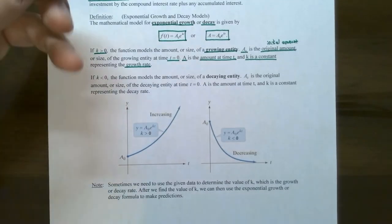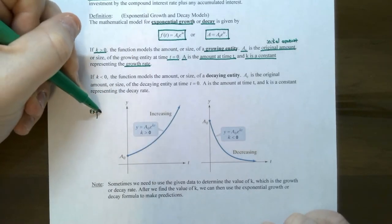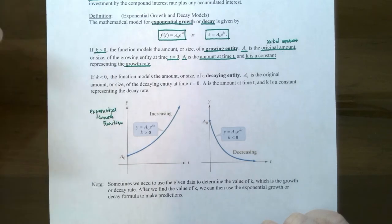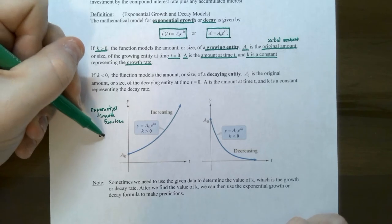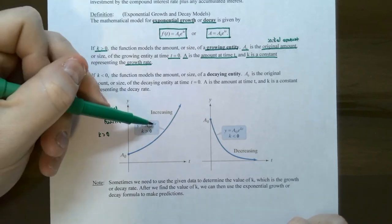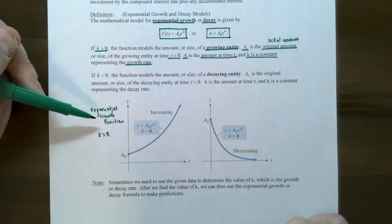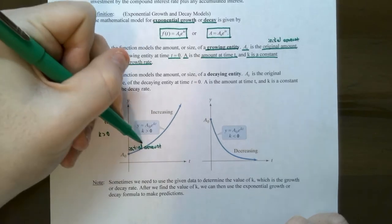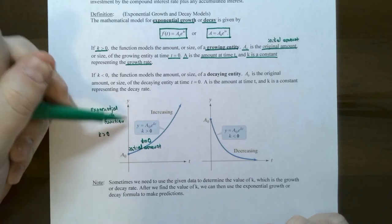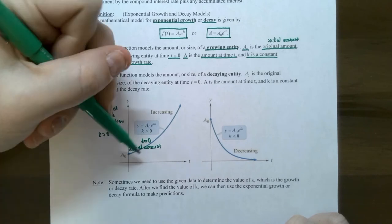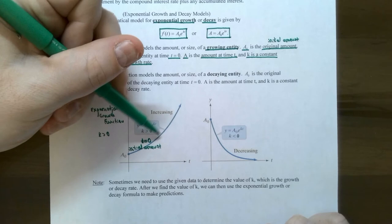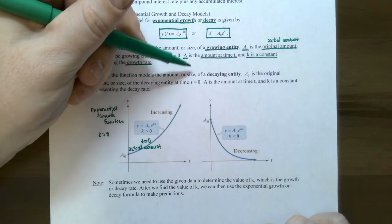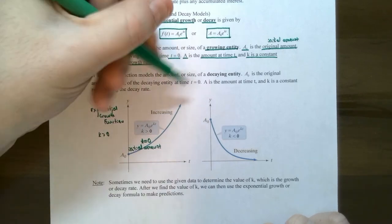Let's look at exponential growth. The graph on the left is an example of an exponential growth function. Exponential growth occurs when k is positive — the k will be a positive number and it tells you that the amount is growing over time. The a₀ is the initial amount, and this is when time equals zero, right on the y-axis. As time increases, the population, or the amount of a substance, or the balance in a bank account, will grow indefinitely. This is called uninhibited growth.